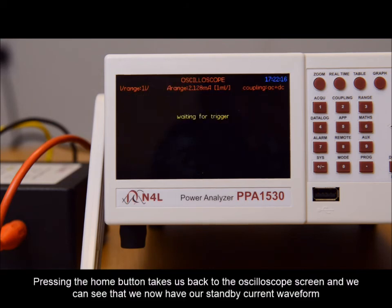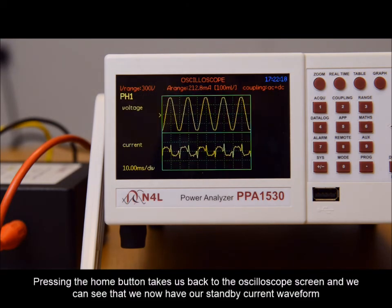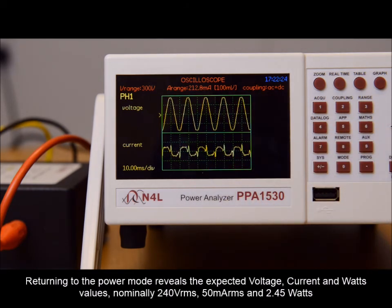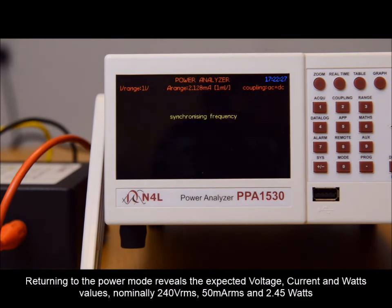Pressing the home button takes us back to the oscilloscope screen, and we can see that we now have our standby current waveform. Returning to the power mode reveals the expected voltage, current, and watts values: nominally 240 volt RMS, 50 milliamp RMS, and 2.45 watts.